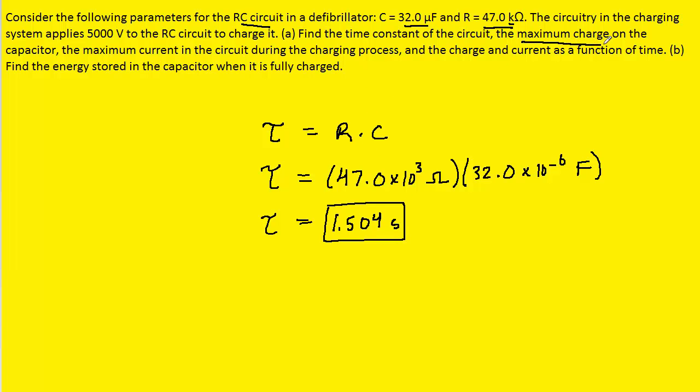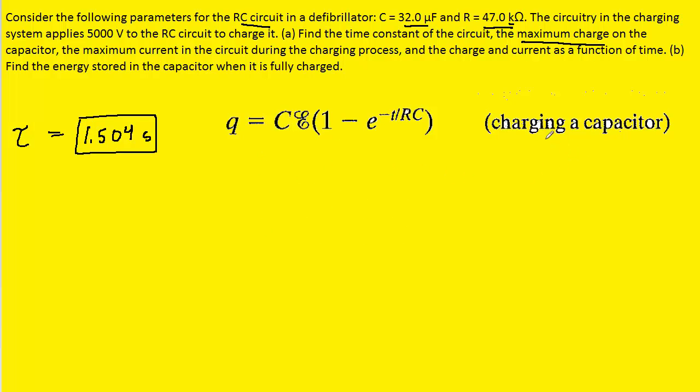We also need to calculate the maximum charge on this capacitor. Now, we know that for a charging capacitor, the charge that's on one of the plates of the capacitor is equal to the capacitance times the potential difference that is supplied by the battery, multiplied by this term here in parentheses. Notice we have the time constant, r times c, present in this equation, and then t would represent the time that has passed since the circuit began to charge.